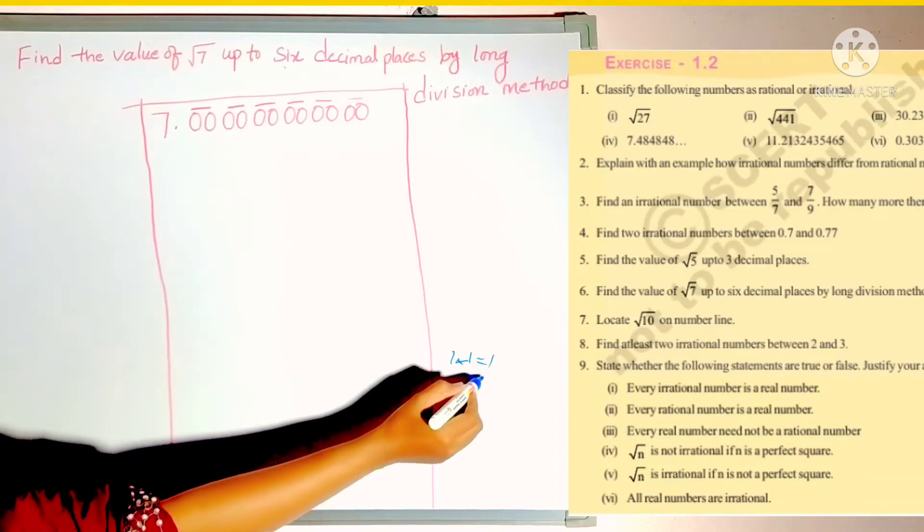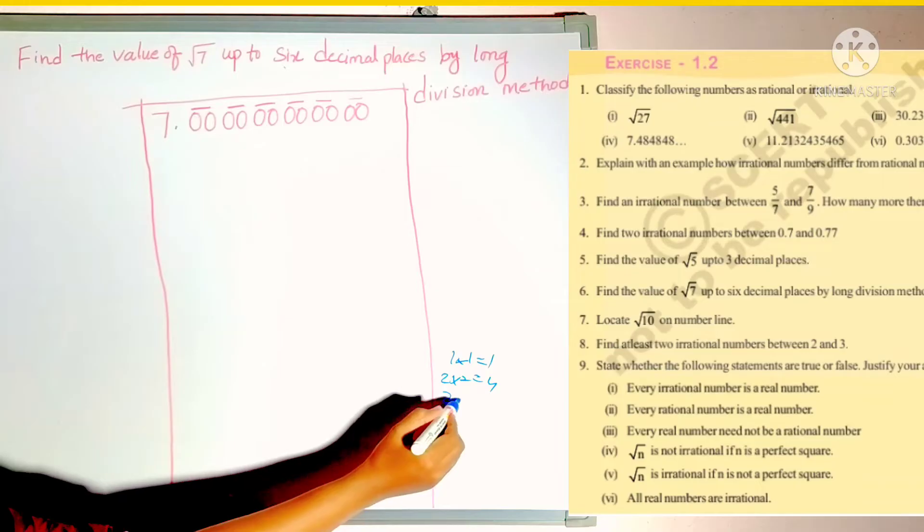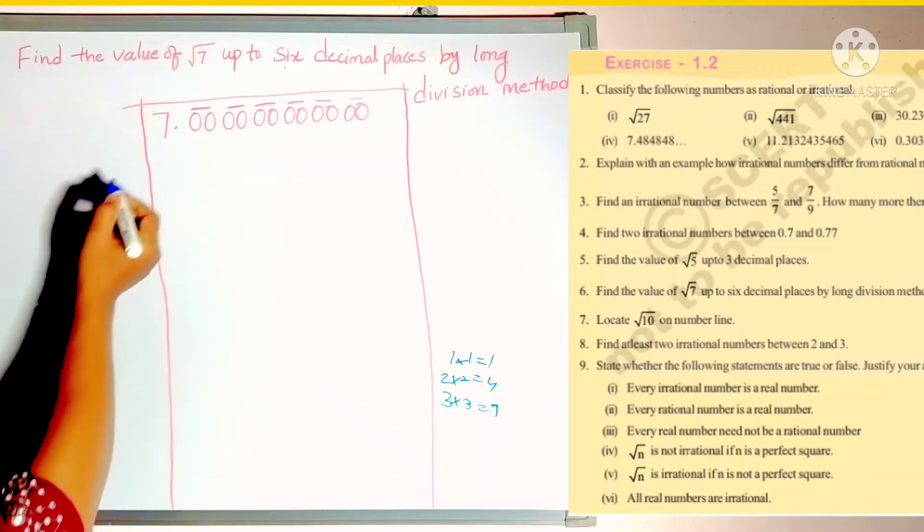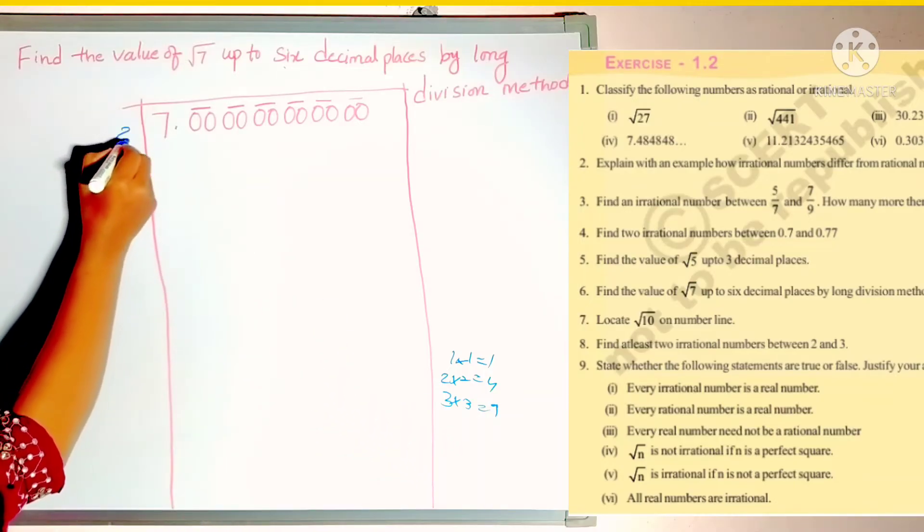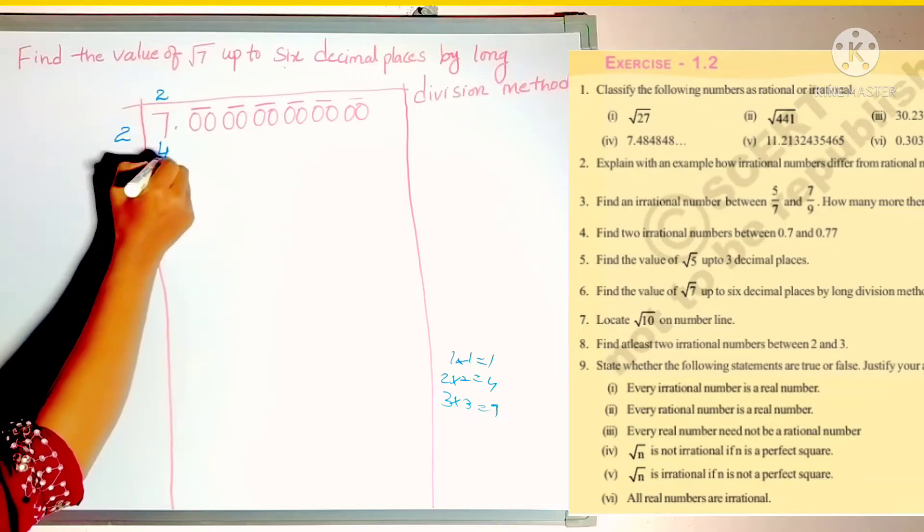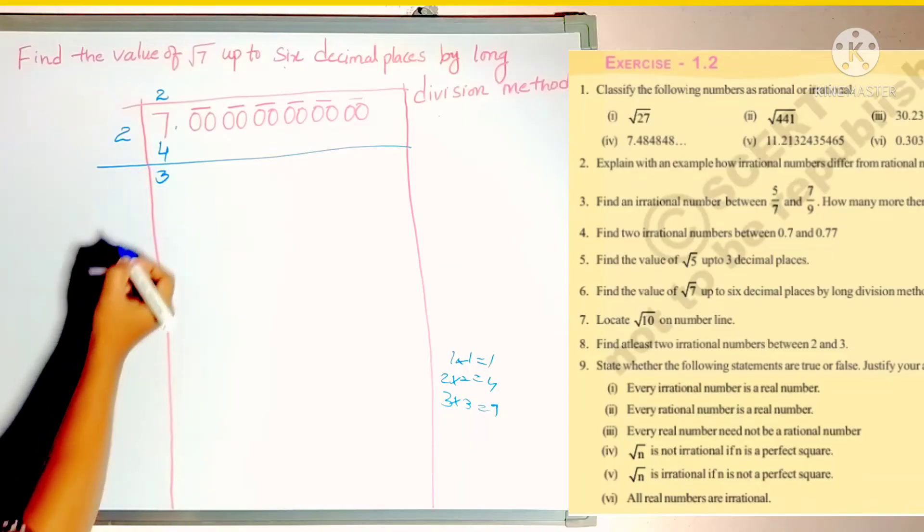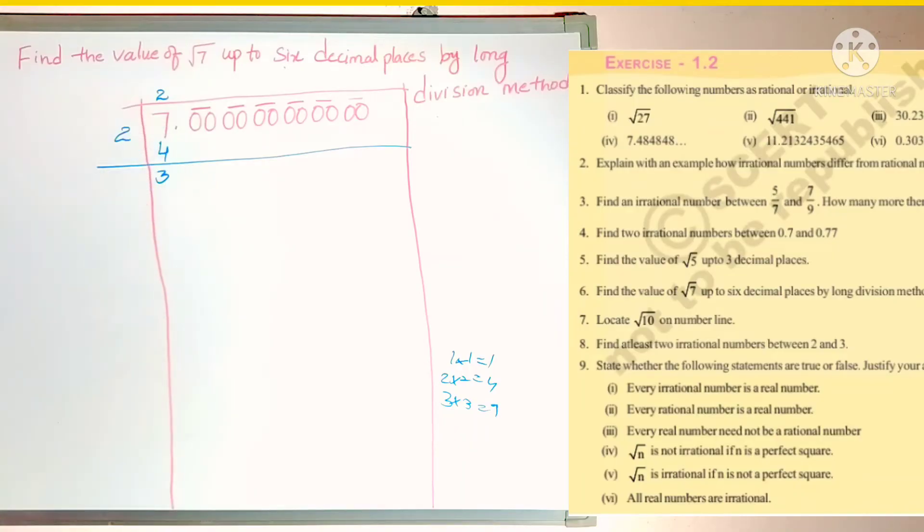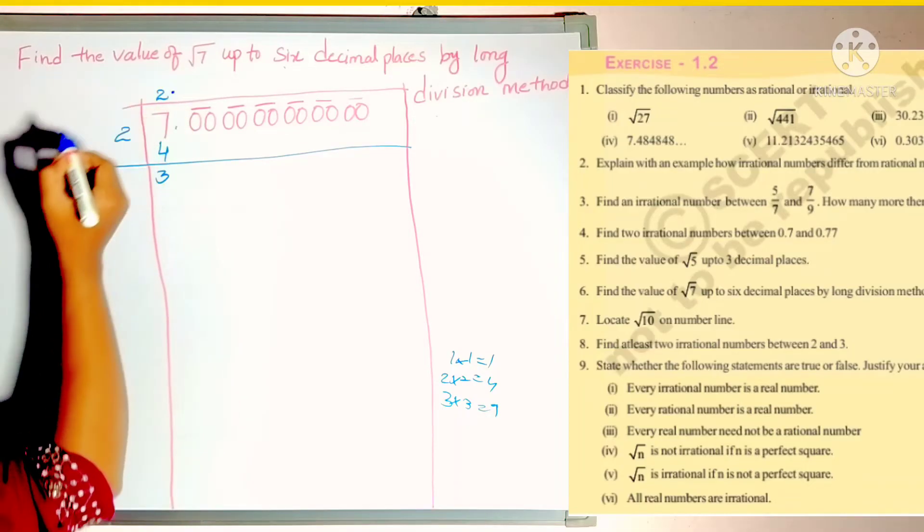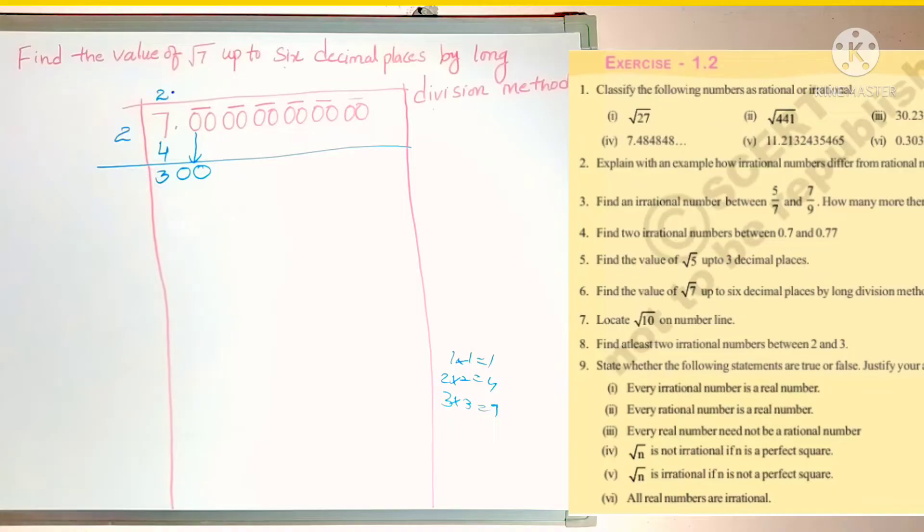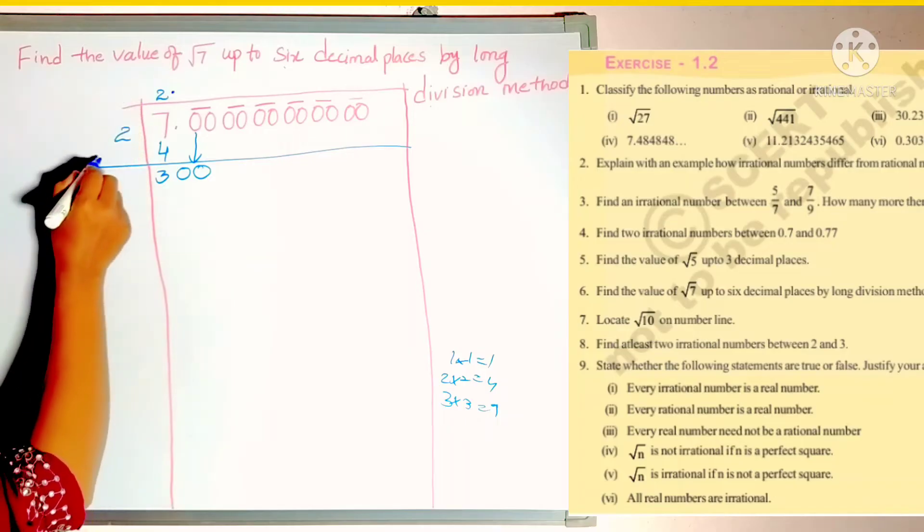That means 1 into 1 is 1, 2 into 2 is 4, 3 into 3 is 9. Like this only we will write the tables. So here 3 times 3 is 9, more than 7. So again we use 2 only. 2 times 2 is 4. So after subtracting we get 3. So now what is there in the quotient: 2. Just add that 2.